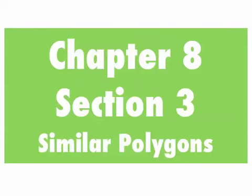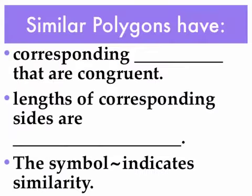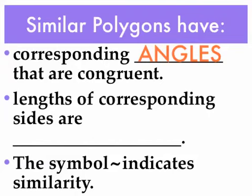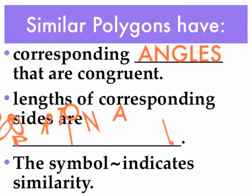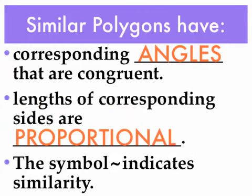Chapter 8, Section 3: Similar Polygons. Similar polygons are going to have corresponding angles that are congruent. Lengths of corresponding sides are going to be proportional, which means I can write the same ratio of corresponding sides from one similar polygon to another, and they should all be able to be reduced to the same ratio — so they're proportional.